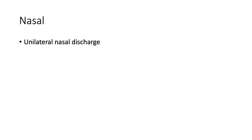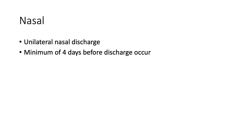A nasal foreign body should be considered in any child with unilateral nasal discharge. The most common age of presentation is between 2 to 4 years old. A nasal foreign body usually requires a minimum of 4 days prior to discharge occurring. Prolonged nasal foreign body within the nose can form granulation tissue, resulting in the formation of rhinoliths that are radiopaque in nature.